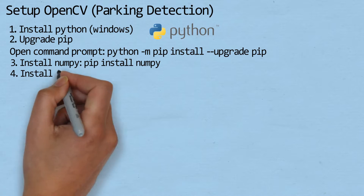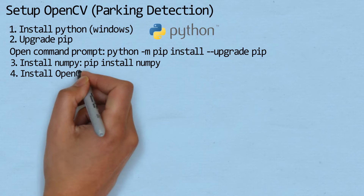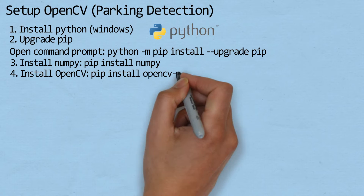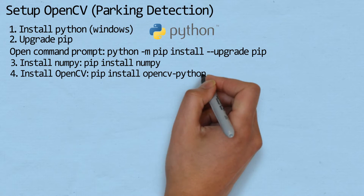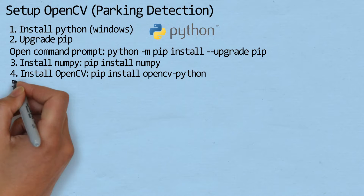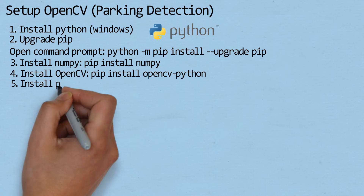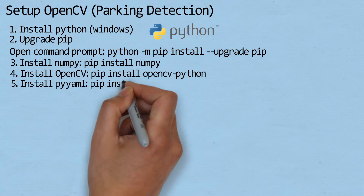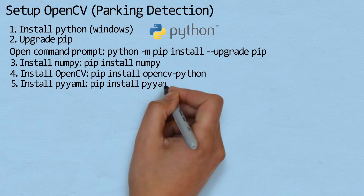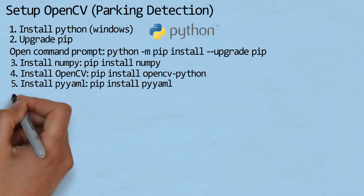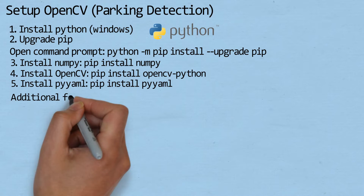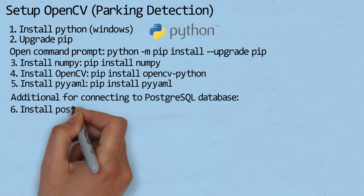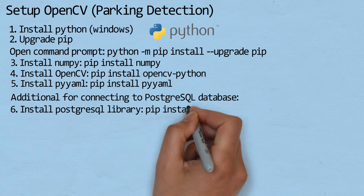Next, install OpenCV. And then, install PyYAML. As an additional library for connecting to PostgreSQL database, don't forget to install the PostgreSQL library.